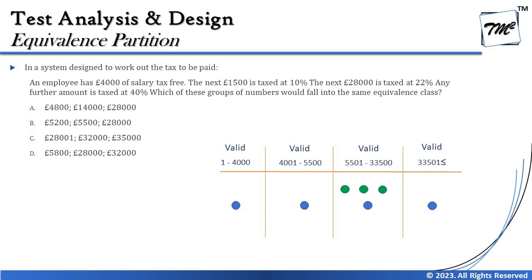The last slab: any further amount is taxed at 40%, meaning 33,501 and greater is the fourth partition. So the complete table is: 1–4,000 (tax-free), 4,001–5,500 (10%), 5,501–33,500 (22%), and 33,501+ (40%). If you go wrong creating this table, you will get a wrong answer — ISTQB knows exactly where people make mistakes.